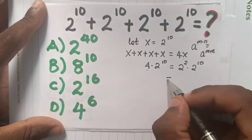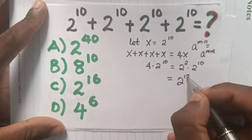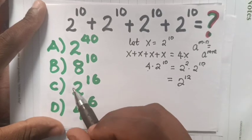Our equation will be equal to a, which is 2, power m plus n, which is 12, from 10 plus 2 is 12.